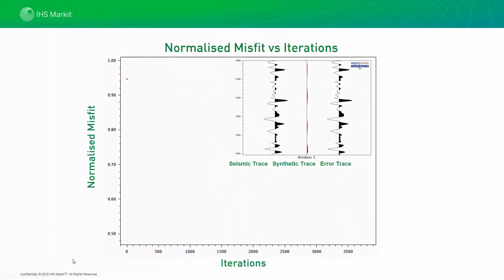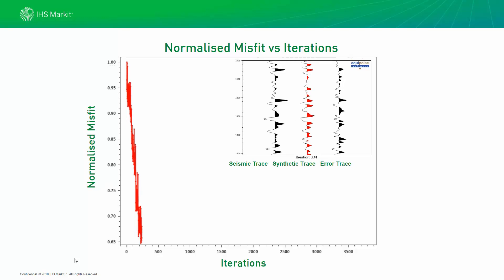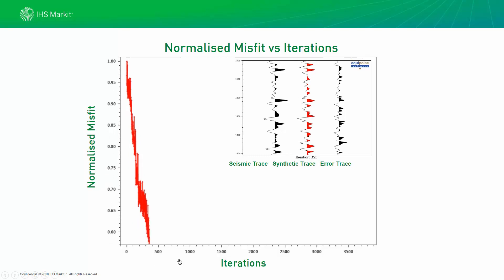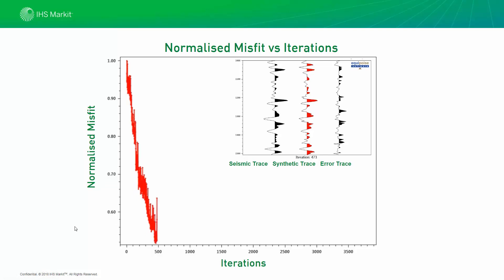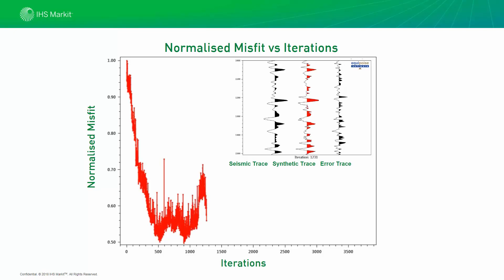In this next video, we will see the normalized misfit versus the iterations, and we have the three seismic traces for reference at the top. We start off here with a near-perfect error, but we quickly round the error down as we start to get some matches between the seismic trace. You can see on the left-hand axis the error is now approaching around 50%. At around 500 iterations, we hit a low point in the data. This demonstrates one of the key things with the SA inversion algorithm: worse solutions will be generated as the iterations progress, before it starts narrowing down and becoming better again. The general trend is narrowing down.